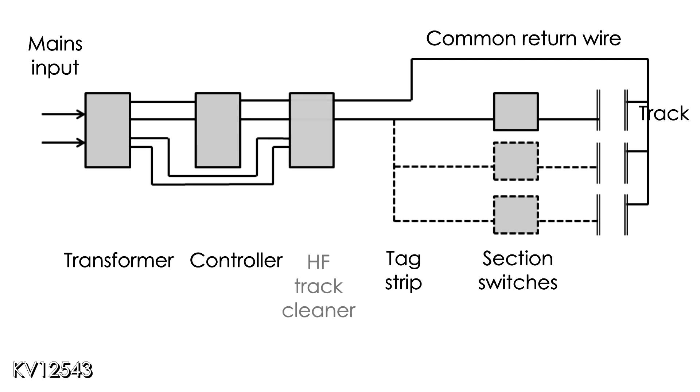An accessory I like to add is a high frequency track cleaner as I believe it helps current flow to locomotives if the track surface gets a little dirty. This device needs its own independent AC power supply which is supplied directly from terminals on the transformer. It can then be inserted in the electronic circuit between the controller and the track section switches.